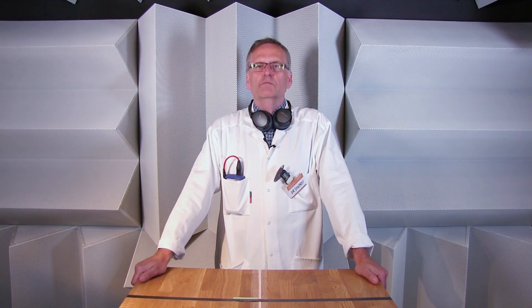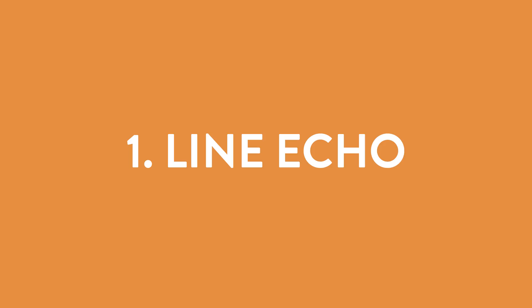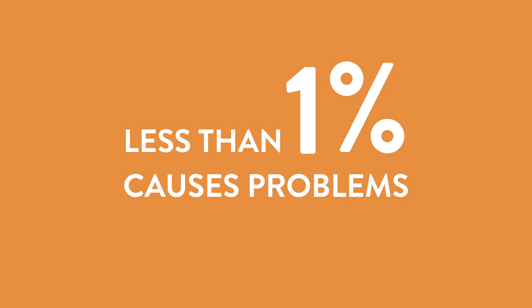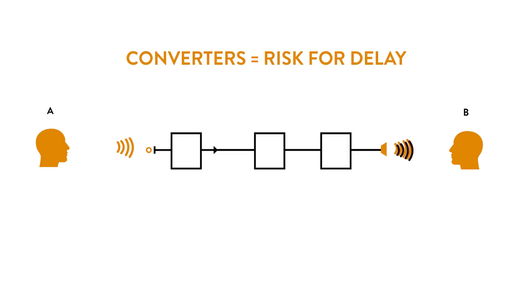When echoes occur, they can be in two different forms. One is line echo, which is caused by crosstalk, encabling, or converters. It doesn't take much for this to be very disturbing — less than one percent of the sound coming back is enough to cause problems. In a digital environment, this problem can be rather large, since the sound passes through several converters. Each conversion takes time and consequently increases the risk for perceived echoes.